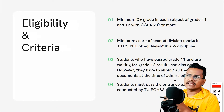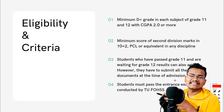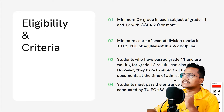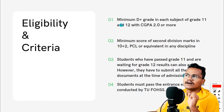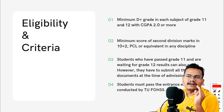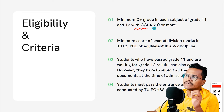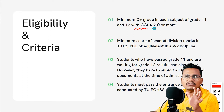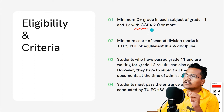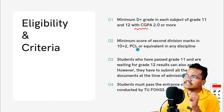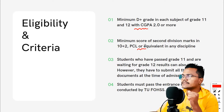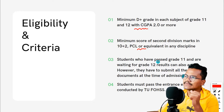Now for eligibility criteria: you must have passed Plus Two (Class 11 and 12) — from science, management, humanities, or social science streams. You need at least a 2.0 GPA or minimum second division. Plus Two with Physics, Chemistry, and Math (PCM), or CTEVT/PCL qualifications also qualify with a minimum second division.